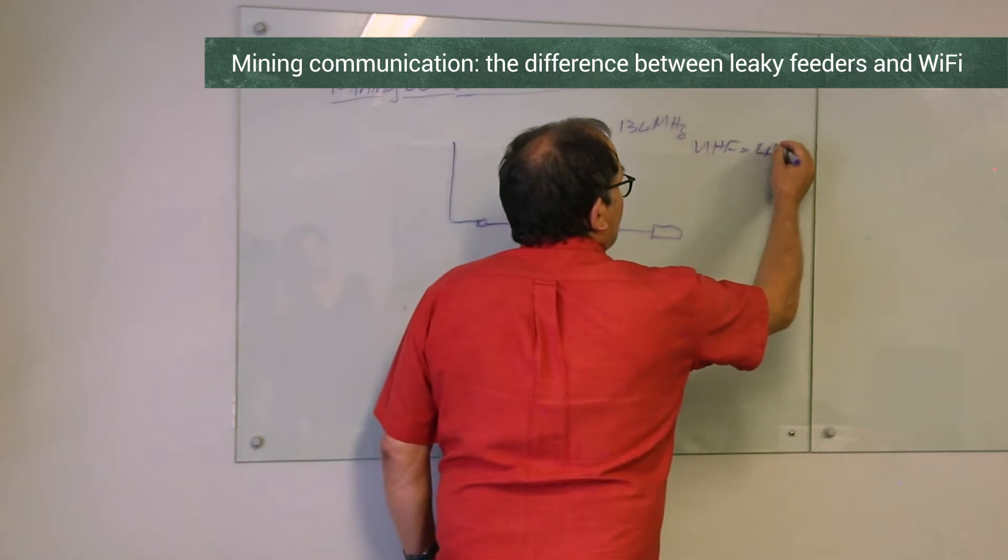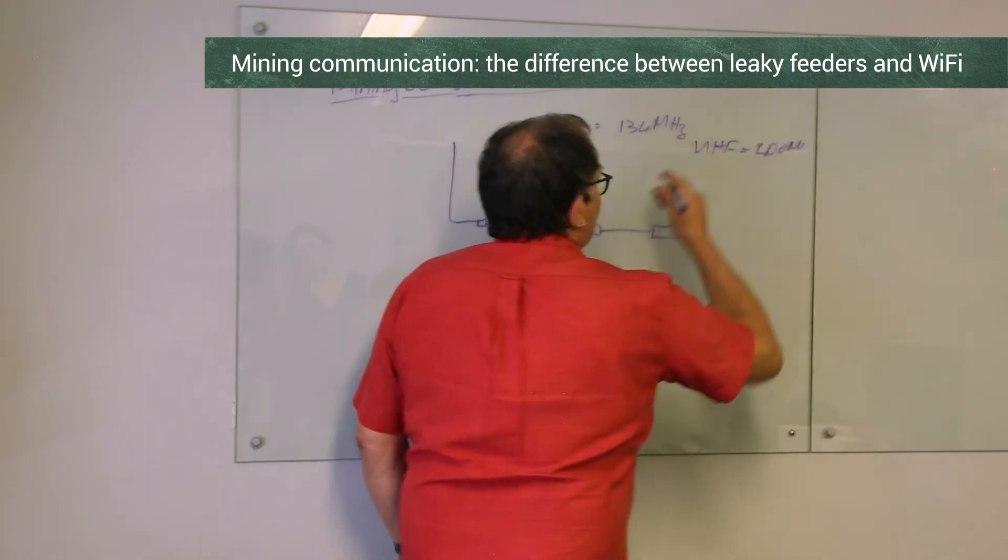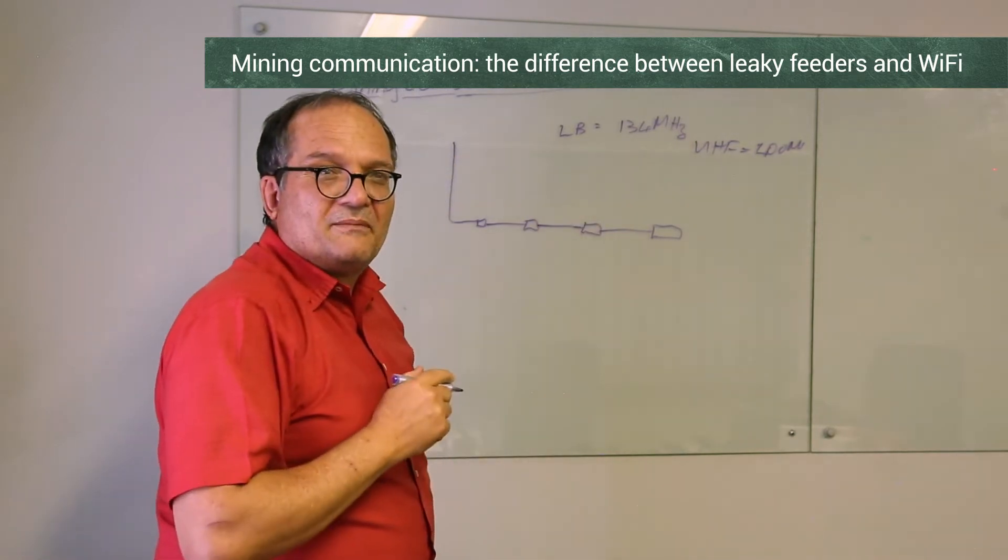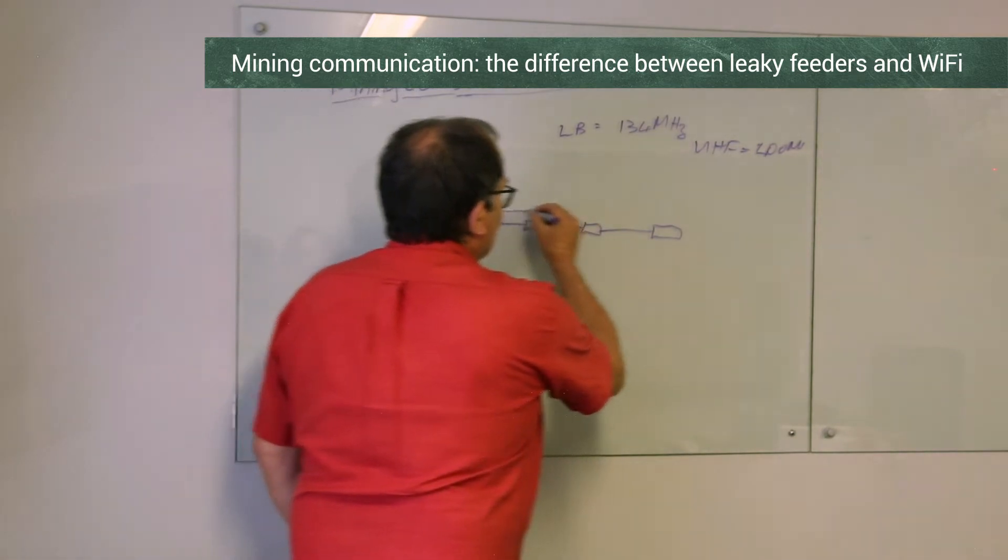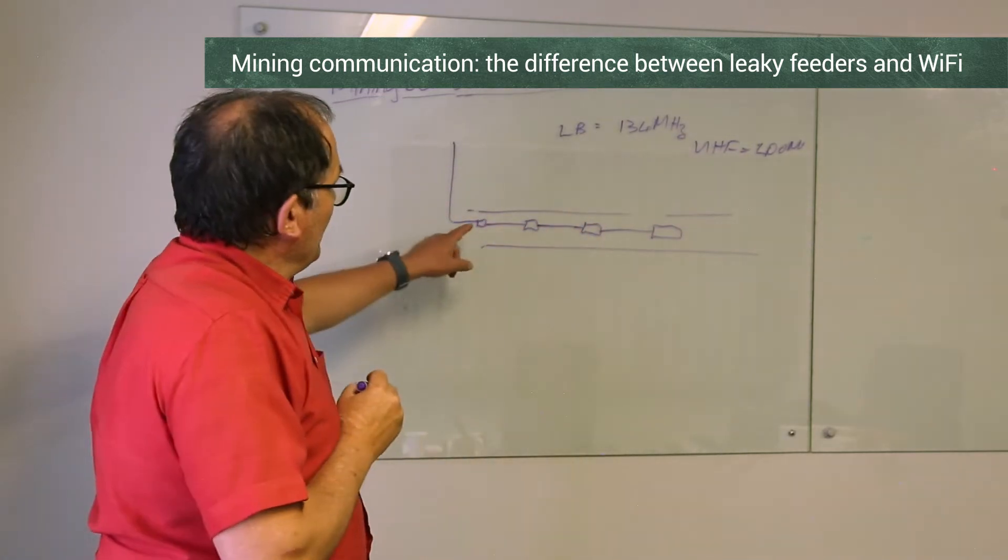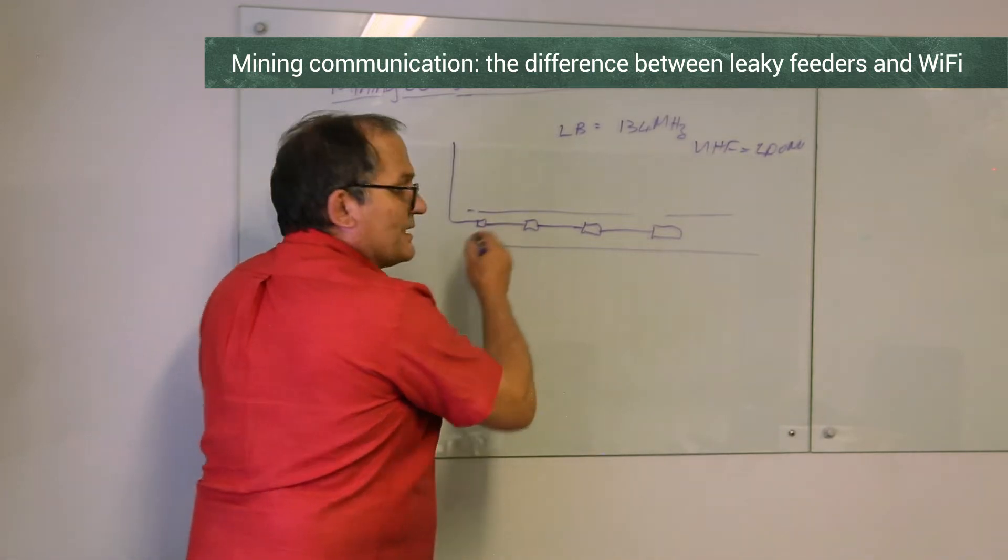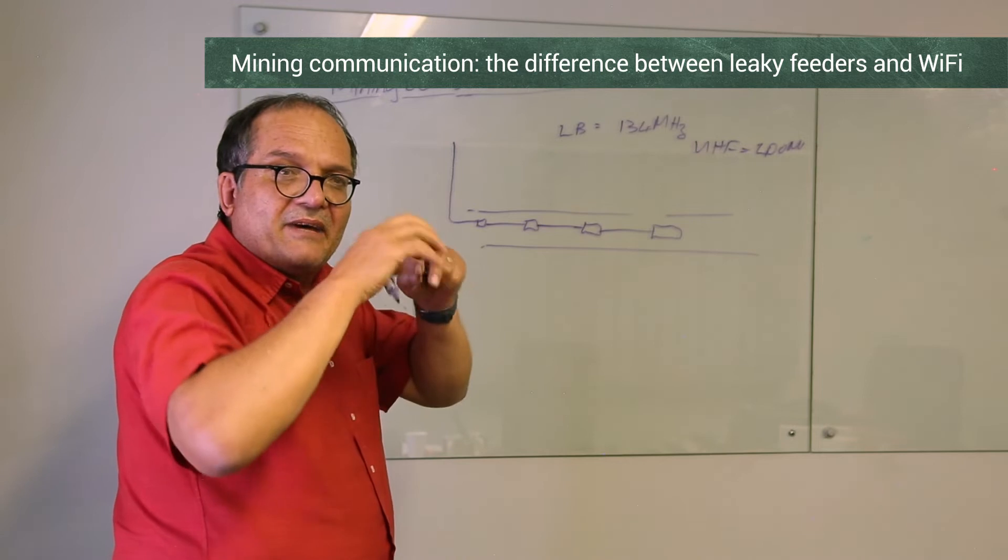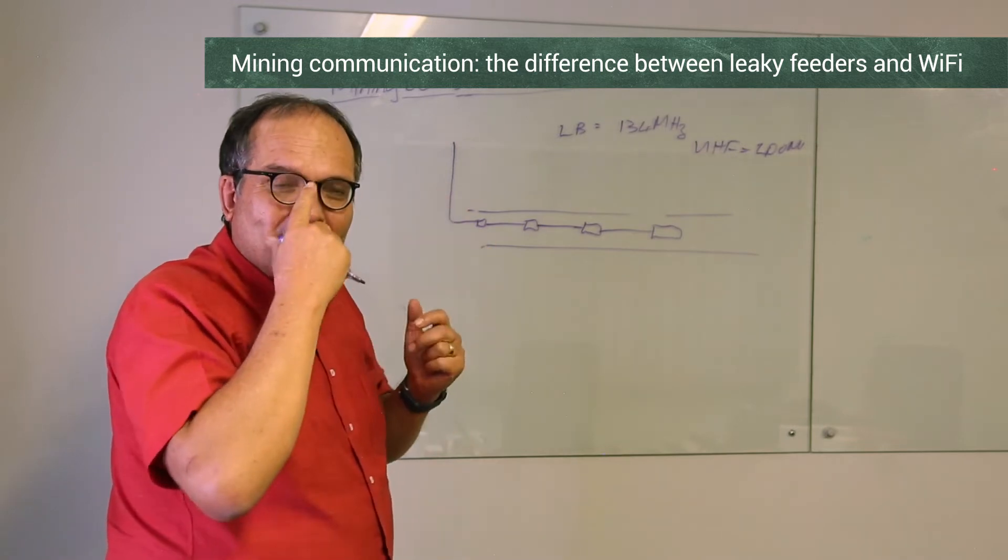People had two-way radios, and of course radio waves don't propagate well underground. This is actually a tunnel. So what they put in is they put in a cable, and it looks like a normal cable but it's actually made specially.